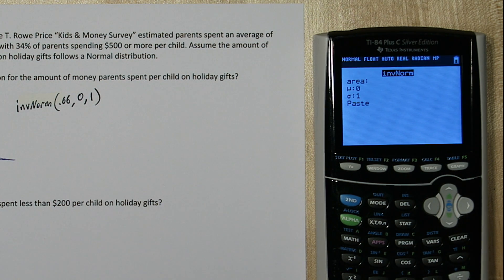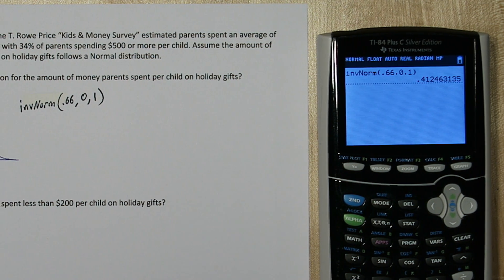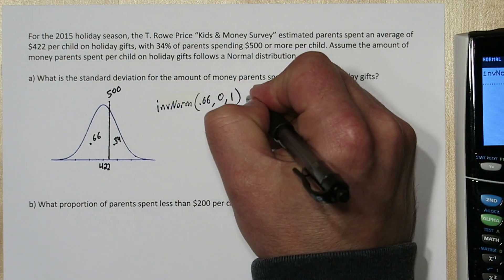For area, we want that area to the left of our cutoff value. So 0.66. We'll leave our mean and standard deviation as 0 and 1. And we get a z-score, 0.4125 approximately.